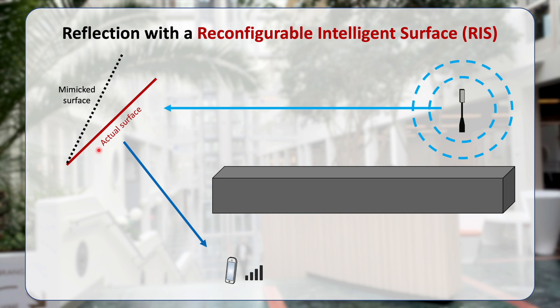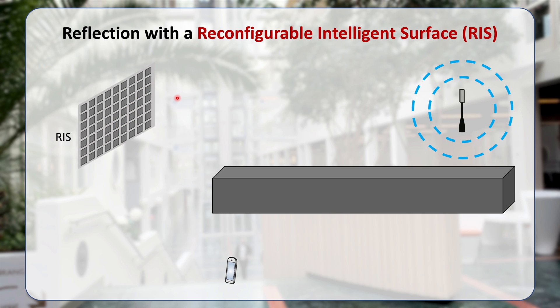But if this actual surface is a reconfigurable intelligent surface, it can actually be configured in such a way that it mimics the rotated surface. In particular, it might be delaying the signals in the upper part much more than in the lower part in order to let the wireless signal experience a situation that is similar to the rotated surface. And this is what a RIS can do.